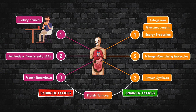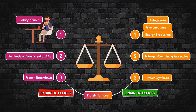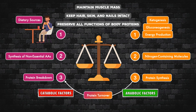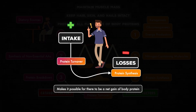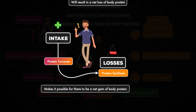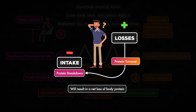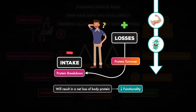Under normal circumstances, assuming adequate total energy intake, the balance of protein breakdown and protein synthesis is controlled, and we're able to offset any losses from the amino acid pool with our normal intake of protein from food. This allows us to maintain muscle mass, keep hair, skin, and nails intact, and preserve all of the other functions of body proteins. If intake consistently exceeds losses, then the balance of protein turnover can shift in favor of protein synthesis, making it possible for there to be a net gain of body protein. But if losses consistently exceed intake, then the balance of protein turnover is shifted toward protein breakdown to replenish the amino acid pool, resulting in a net loss of body protein, leading to an overall decline in functionality — with consequences like the loss of skeletal muscle and a decreased ability to fight off infection.